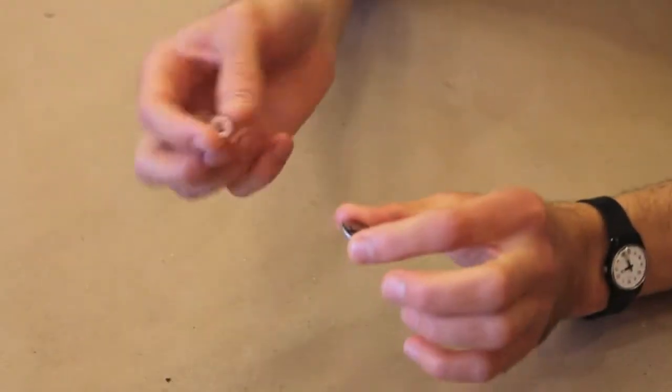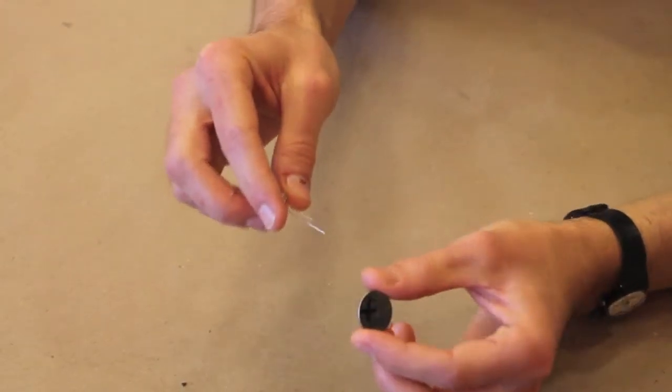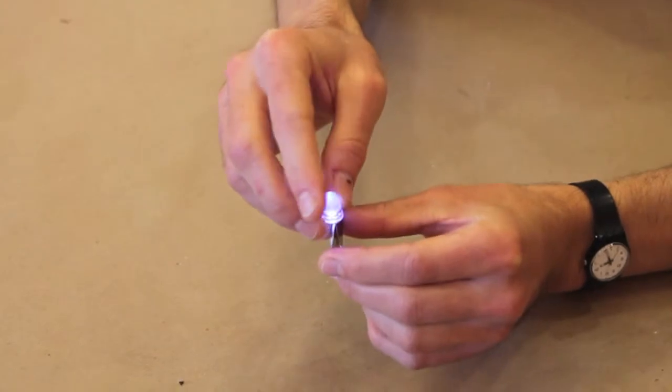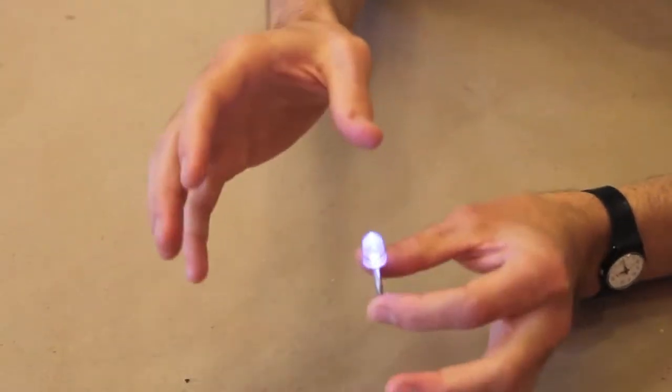So the simplest form of this circuit is to actually just slide the LED onto the battery directly. There are no wires involved and no copper tape, none of that fancy stuff.